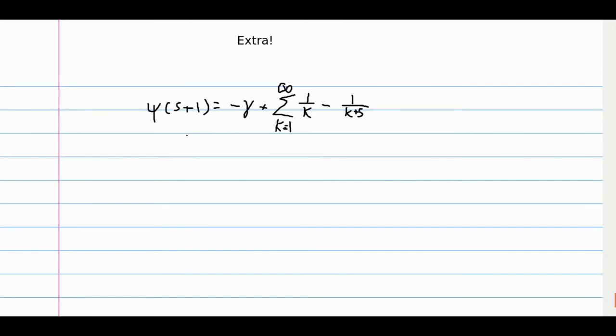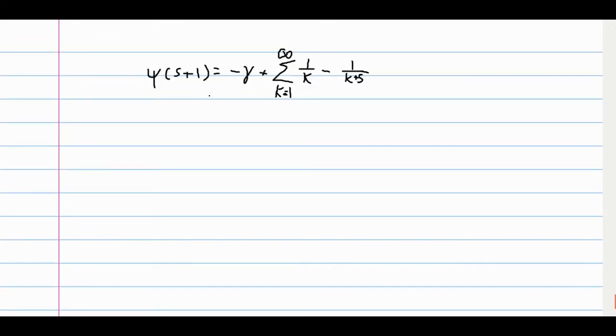One more thing that I forgot was basically just another form for the digamma function. So, what we're going to do right here is, this 1 over k minus 1 over k plus s, we're actually going to replace that with the integral from 0 to 1 of x to the k minus 1 minus x to the k plus s minus 1. And so, these are simple polynomial terms, and you can see that integrating will indeed give this.